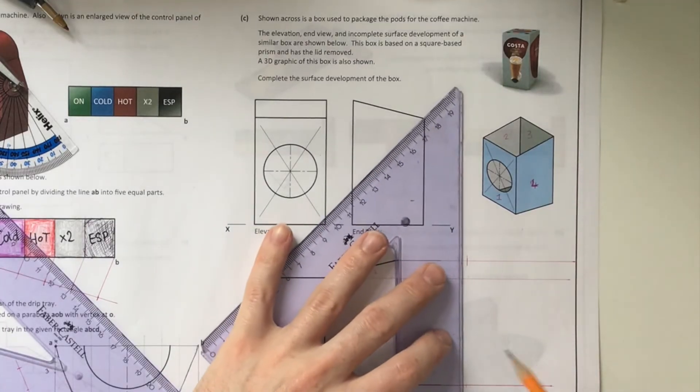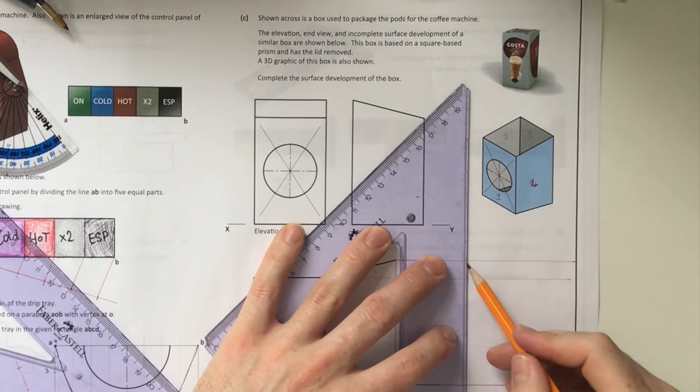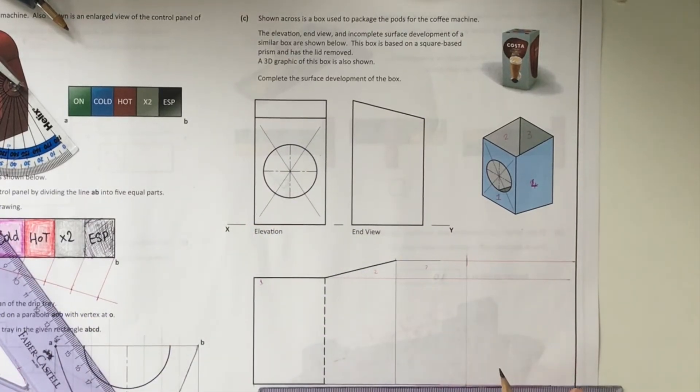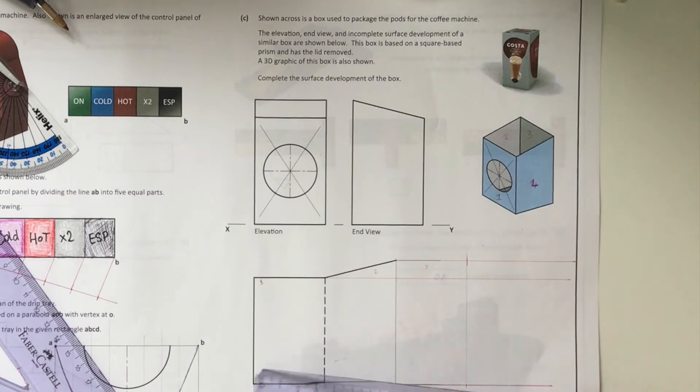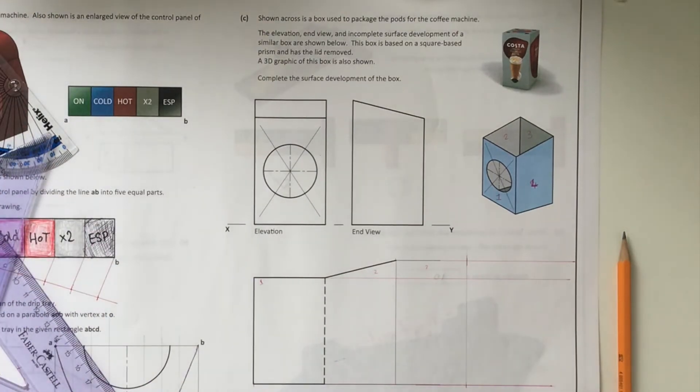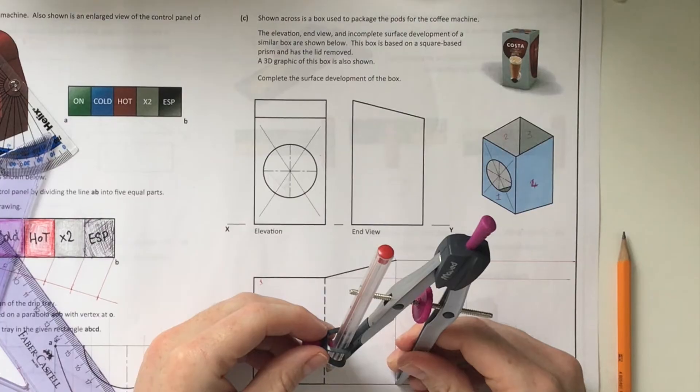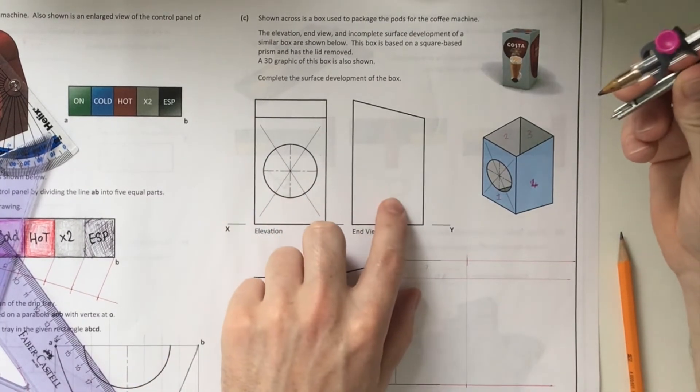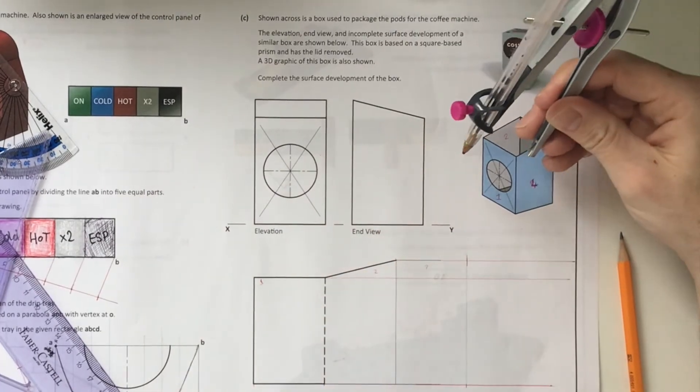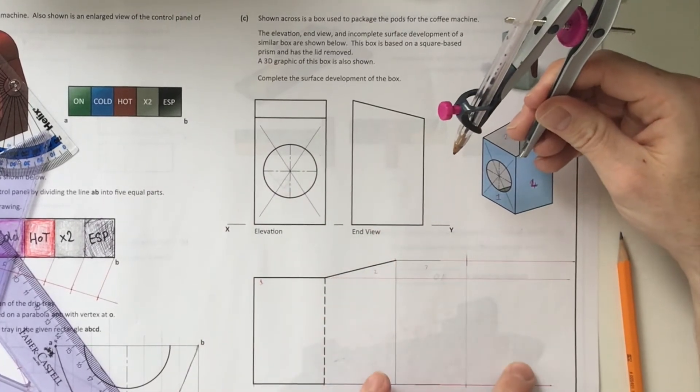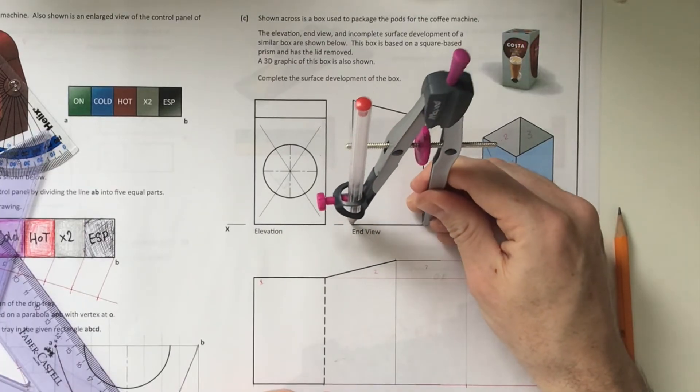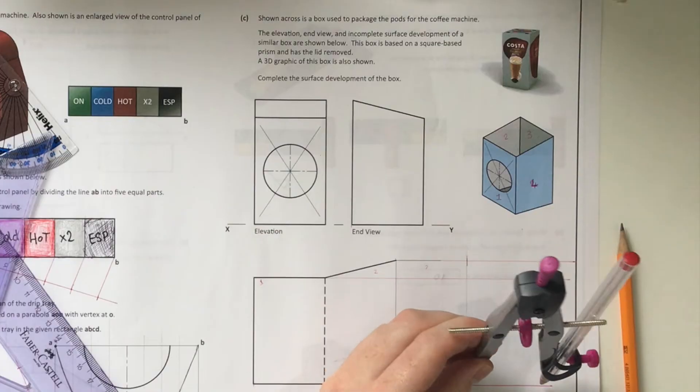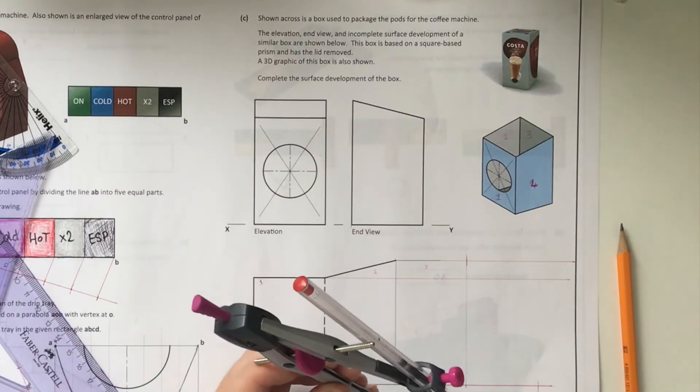I'm going to step off that distance to create surface number three in my development. Then I'll put in a little construction line. Then I'm going to grab my compass, get the width of surface number two and four. Two and four are back to back to one another. I'm going to drop that in after surface number three. From that construction line, I'm going to step off the width of surface number four.